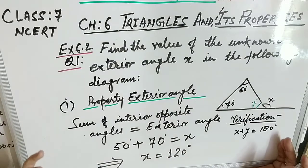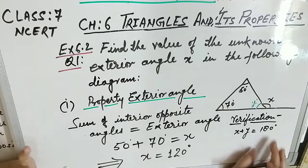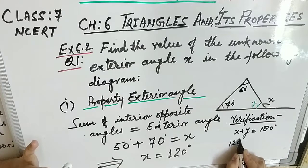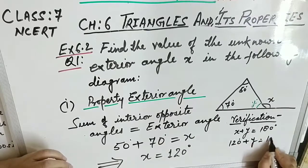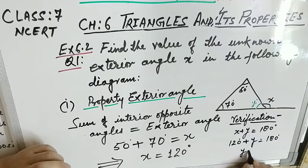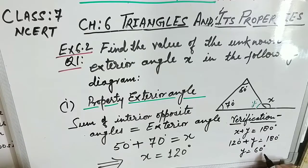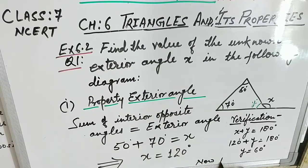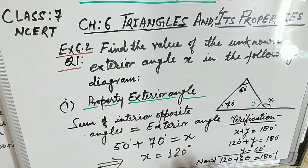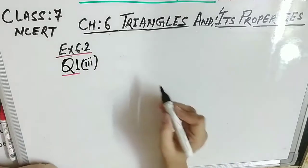Verification: we can use linear pair, since the exterior and adjacent interior angle form a straight line. x = 120°, so the adjacent angle y = 180° − 120° = 60°. Then x + y = 120° + 60° = 180°, which confirms our answer is correct.